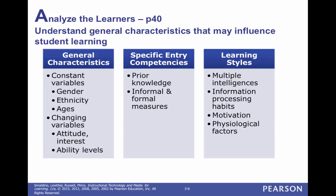In column two, it discusses specific entry competencies. When students start the lesson, you think about their prior knowledge — what do they know? You can pre-test students. One way is an actual pre-test, and another is to ask students what they know about the topic, maybe by writing it down. You can do a KWL chart: what do you know, what do you want to learn, and what did you learn at the end? There are also informal measures, such as asking students to raise their hand if they know about a topic.